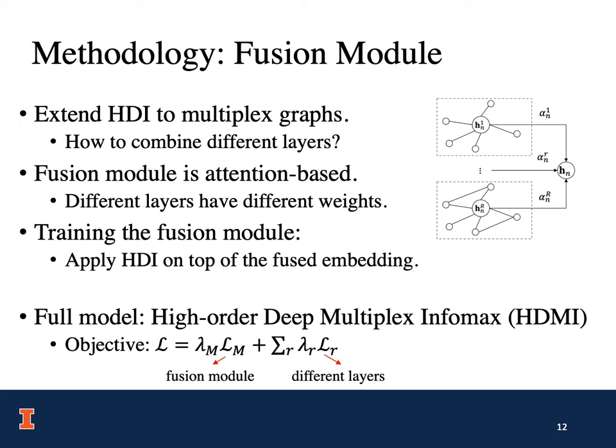We extend HDI to multiplex graphs. The key challenge is how to combine node embeddings from different layers, and we propose an attention-based fusion model where we learn different weights for node embeddings from different layers. To train the fusion model, we apply HDI on top of the fused embedding. The full model is called the high-order deep multiplexing infomax, HDMI for short, and its objective function is the combination of the objective function for the fusion model and the loss functions for the different layers.